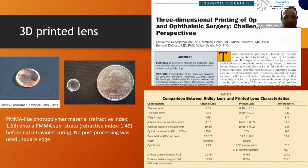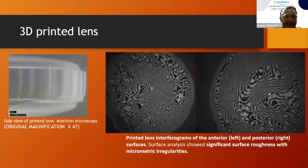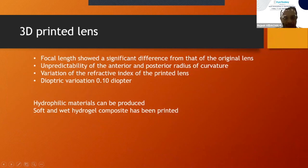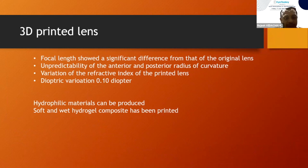They also wanted to reproduce a posterior chamber intraocular lens — the Ridley's lens — but after printing, they found problems: the surface was not regular, interferograms showed irregularity, and there was unpredictability in the anterior and posterior curvature of the printed lens, as well as variation in refractive index and power. But in the future, these may be corrected and we may get both hydrophilic and hydrophobic foldable lenses that are 3D printed.